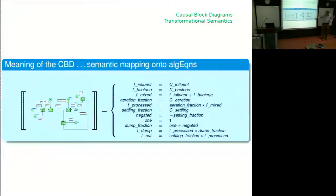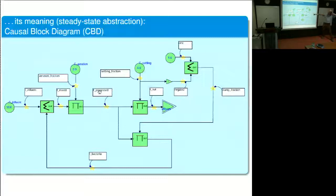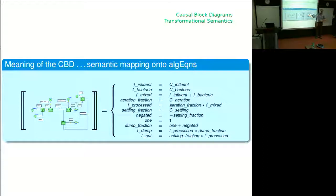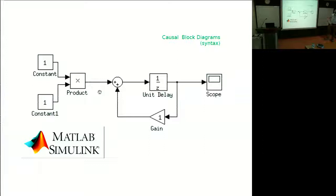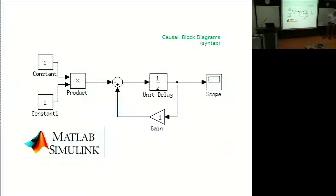A naive operational semantics algorithm starts at time zero and while the end condition is not met, increments time by a fraction of one. At every time step, it walks through the block diagram graph from known to unknown values—pushing values through, multiplying, and so forth. Dependency graph building, loop detection, and scheduling determine the order in which blocks are evaluated. For all blocks in the ordered schedule, each block takes its inputs and produces its outputs, then time is incremented.